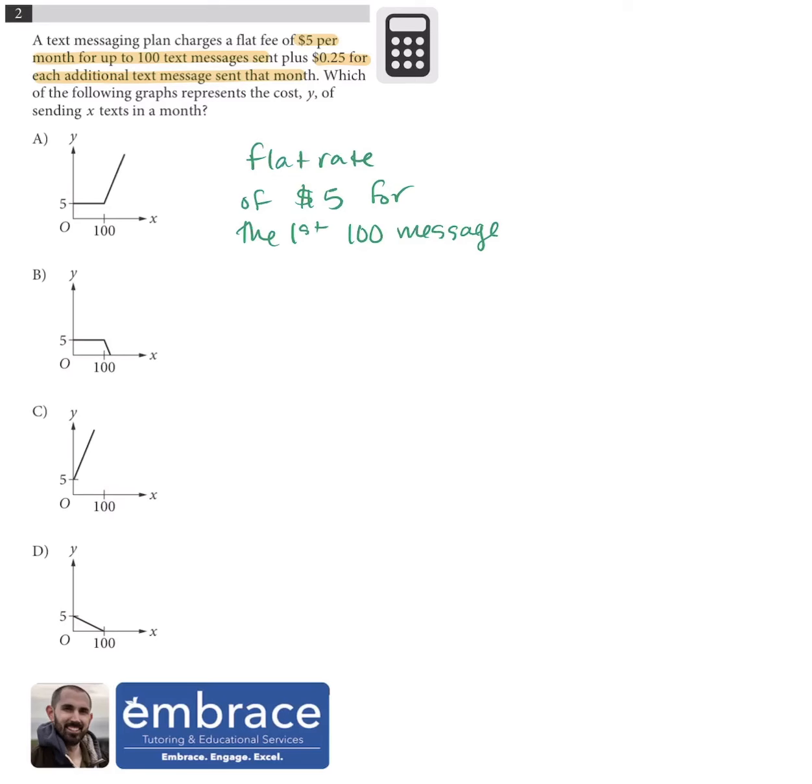So that means the one that shows us a flat rate for the first 100 messages is A and B. And the flat rate is represented by this horizontal line. So that tells us that it's $5 until it gets to 100.